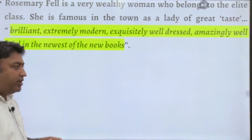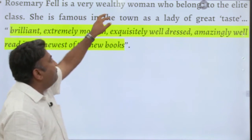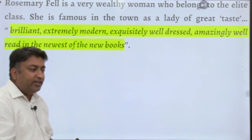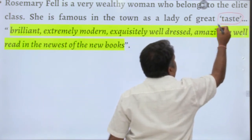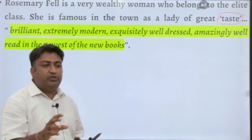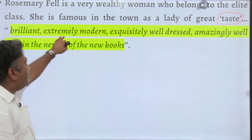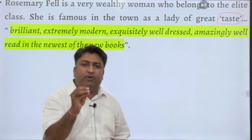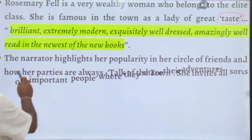In the very beginning of the story we are told that Rosemary Fell is a very wealthy woman who belongs to the elite class. She is famous in town as a lady of great taste — taste is considered a defining characteristic of elite society. The narrator describes her as brilliant, extremely modern, exquisitely well dressed, and amazingly well read in the newest books.